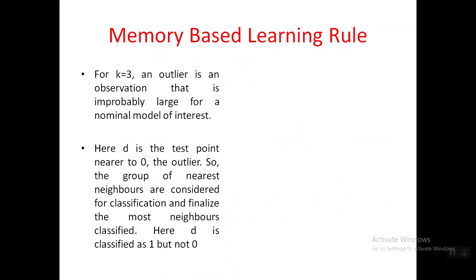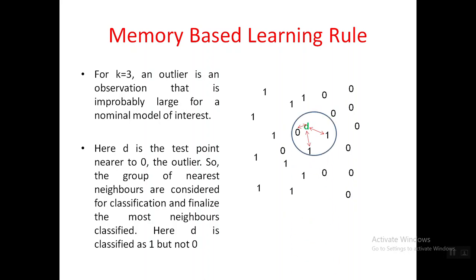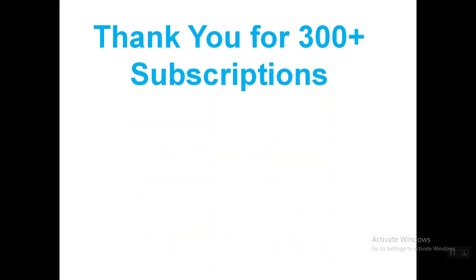For example, with k=3: one classifier is labeled '1' and the other '0'. If d is x_test and its single nearest neighbor is '0', that alone is not the correct classification. Looking at k=3 nearest neighbors, d has more neighbors from class '1' than class '0', so d belongs to class '1'. That is the explanation for the memory-based learning rule.